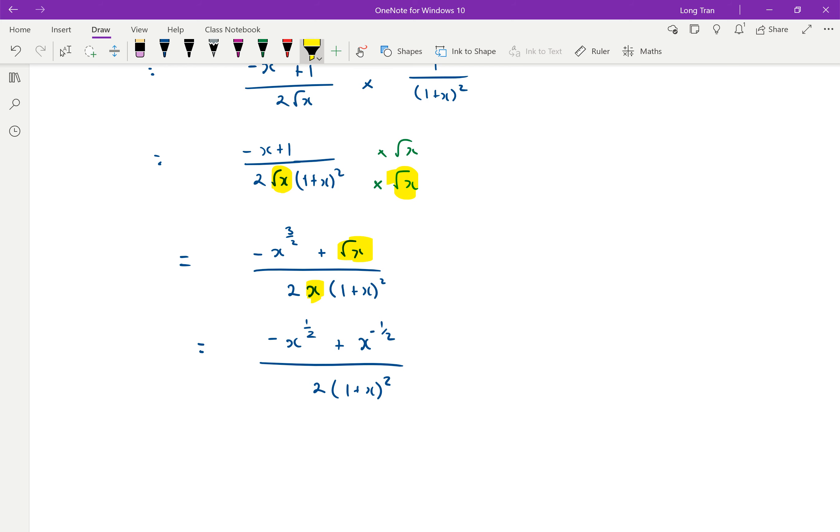So I just timesed it top and bottom by root of x. So this entire bracket multiplied by root of x. And that will then give you, essentially in this line, this should have been x to the power of half, which is root of x. And then the root of x times root of x is just x.